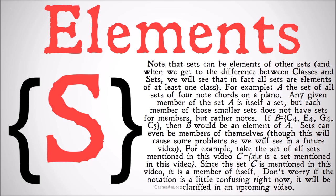Note that sets can be elements of other sets, so something can be both a set and an element. When we look at the difference between classes and sets, we will see that in fact all sets are elements of at least one class. For example, A is the set of all sets of four-note chords on a piano. So a member of A might be C4, E4, G4, and C5. Any given member of the set A is itself a set — it's a set of notes. That chord is a set of notes, so A is a set of sets.